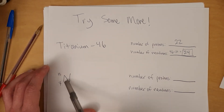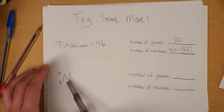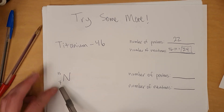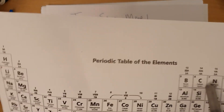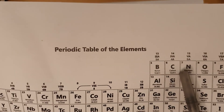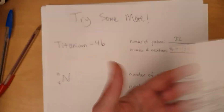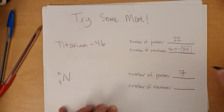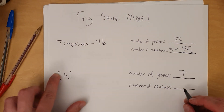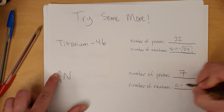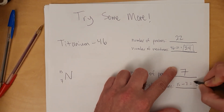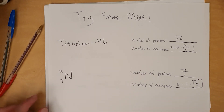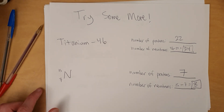For nitrogen with the symbol shown — the number of protons goes on the bottom. Nitrogen is defined by having 7 protons. To find neutrons: take the mass number 15 minus the number of protons 7, which gives 8 neutrons. That's how you do it.